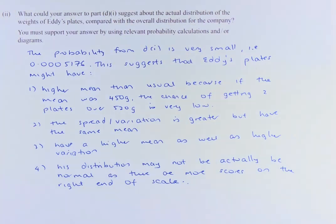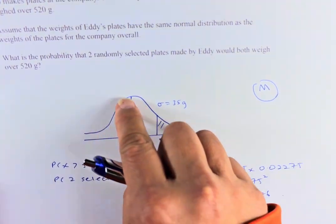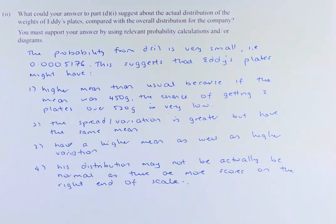The second point is that the spread or variation might also be higher because there are more data on the right-hand side. So the spread will be more to the right-hand side. So that is another reason why the variation might be higher. So to combine 1 and 2, they have a higher mean as well as a higher variation.